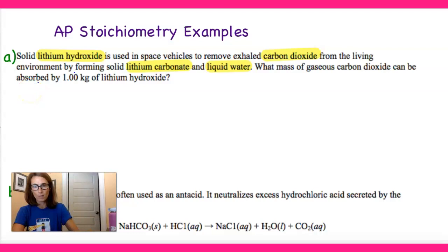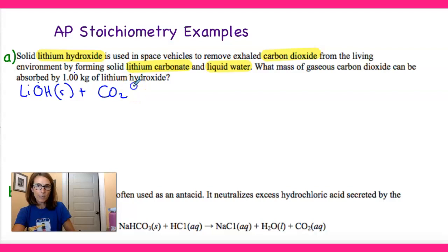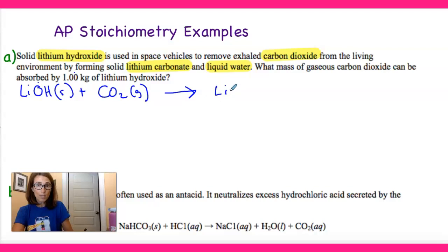So lithium hydroxide — lithium is a +1 and OH is −1, so the formula is LiOH. Carbon dioxide — CO₂, everybody should know that. If you're breathing it out, it can't be a solid or liquid, so it's a gas. So we have LiOH plus CO₂, and then we're producing solid lithium carbonate. Carbonate is CO₃²⁻, lithium is +1, so I need two lithiums to balance: Li₂CO₃ solid, and liquid water, H₂O.